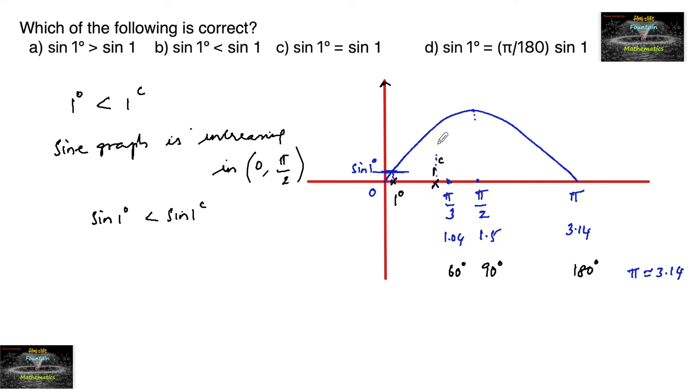And corresponding to 1 radian, here you can see that sin 1 radian is greater than sin 1 degree. Or we can say sin 1 degree is less than sin 1 radian. If there is no unit mentioned, that implies radians. So sin 1 degree is smaller than sin 1 radian, which means the second option is correct. Thank you.